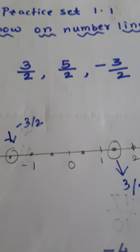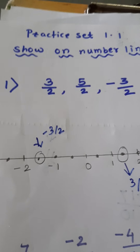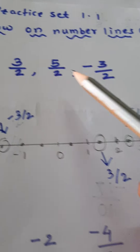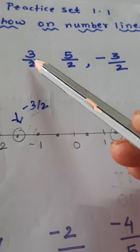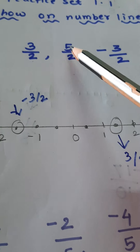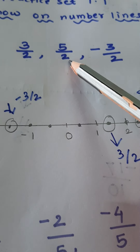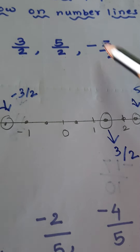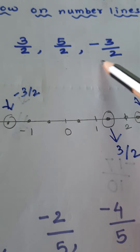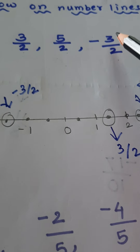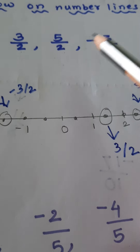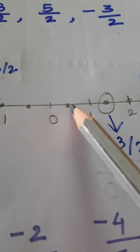Now let's see Practice Set 1.1. Show the following rational numbers on the number lines: the first example — 3 upon 2, 5 upon 2, and negative 3 upon 2. Observe the denominator — 2 is there. It means there are 2 equal parts from 0 to 1.